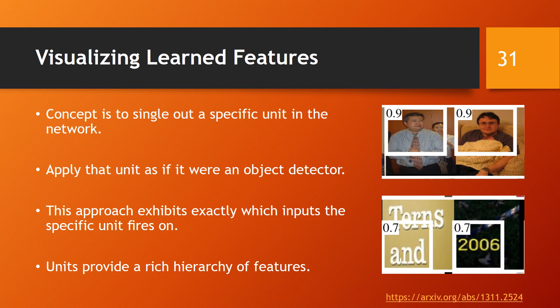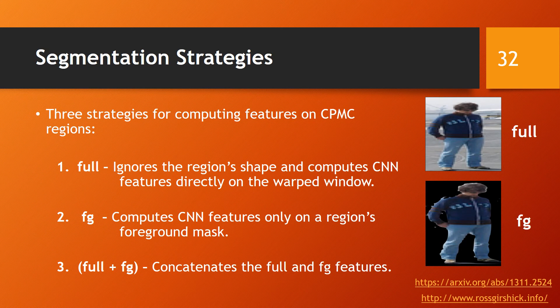To visualize what the network learned, a simple non-parametric approach is employed to identify a particular unit in the network and apply it as if it were an object detector. The representative samples of these units demonstrate that the convolutional layers are capable of learning a diverse set of rich features. For semantic segmentation, three strategies are applied. The full strategy uses the entire warped sample to compute CNN features, similar to the object detection approach. The FG strategy replaces the background of the warped sample with the mean input, leaving only the foreground mask for CNN feature extraction. The third strategy corresponds to concatenating the first two strategies.